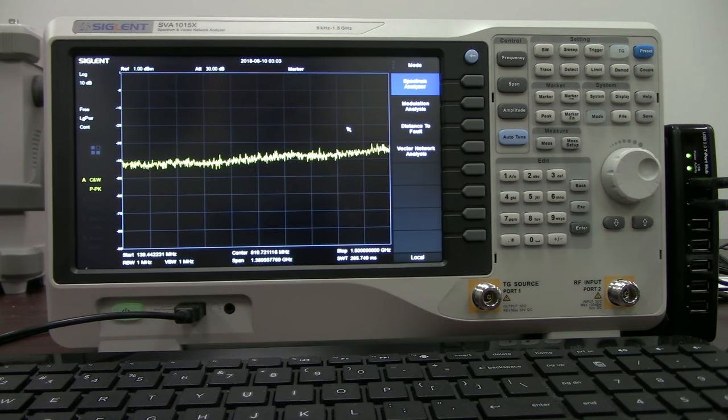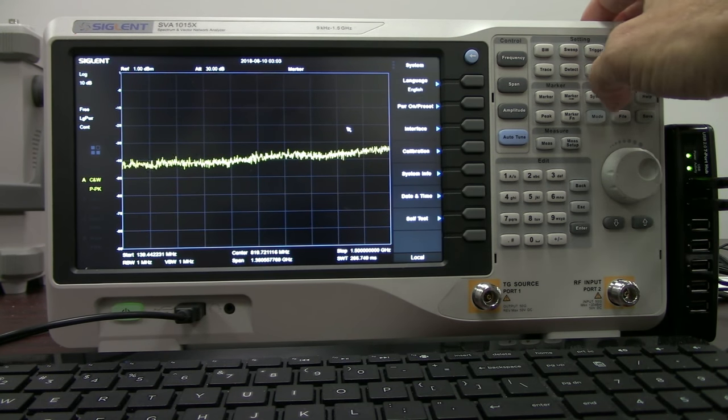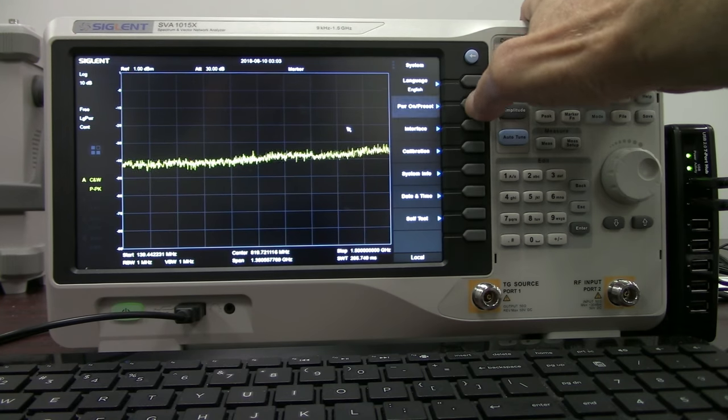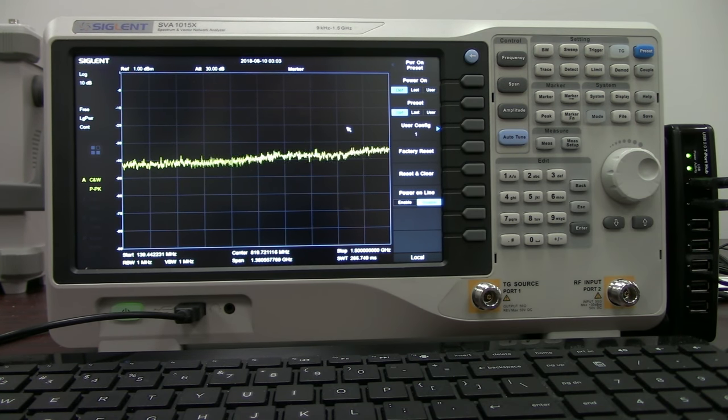And another feature that is interesting here is the power on line. So I'm just going to go into the system menu and go to power on preset. And you'll see that it says power on line enabled or disabled. Power on line and how this works.